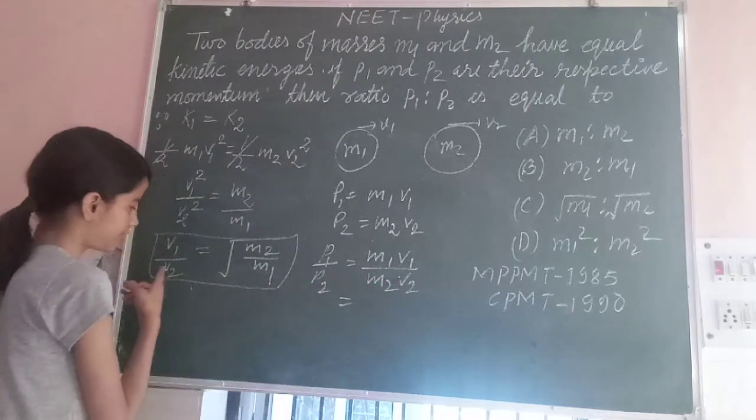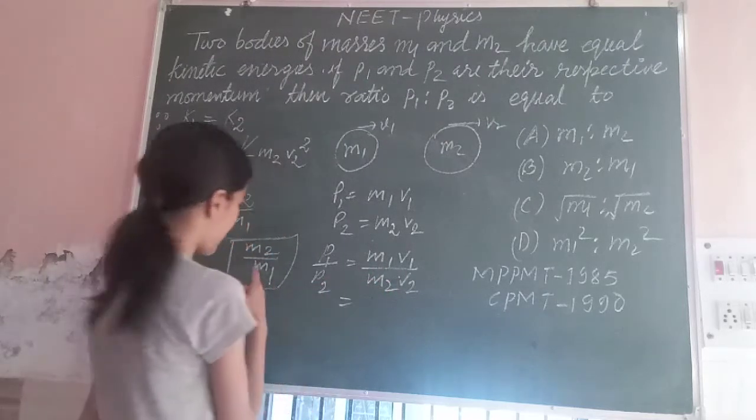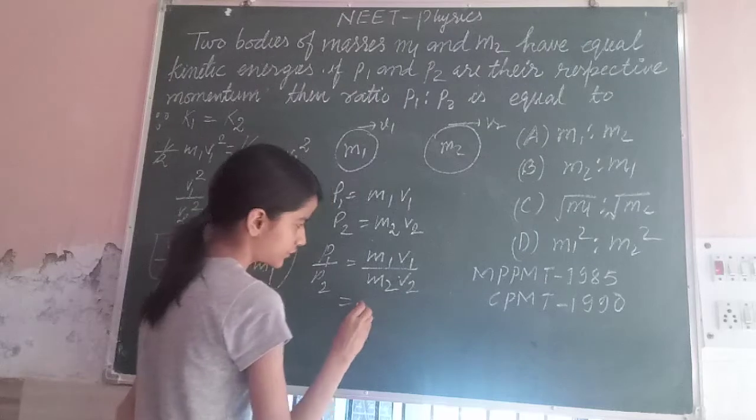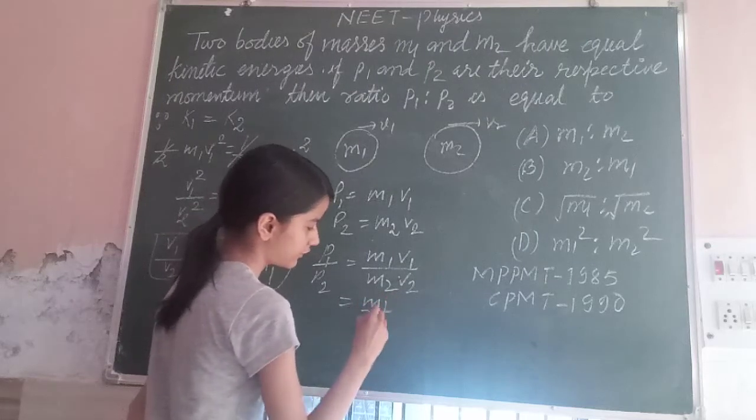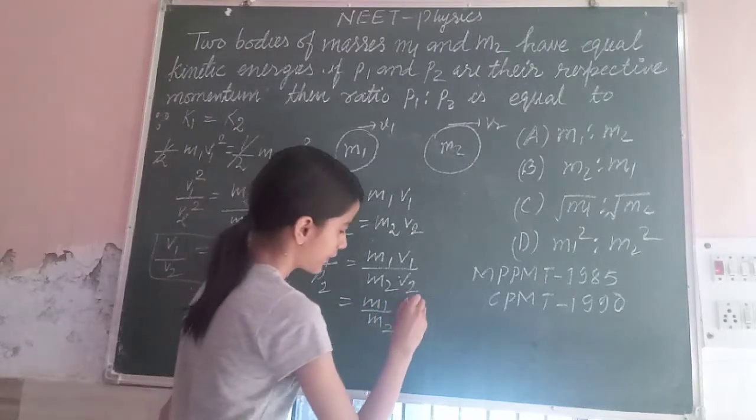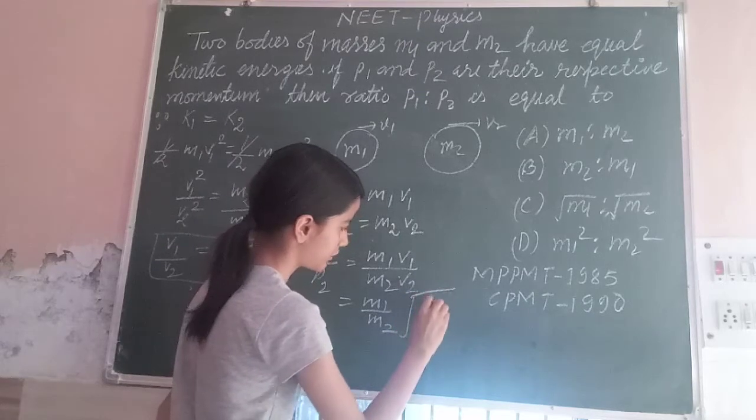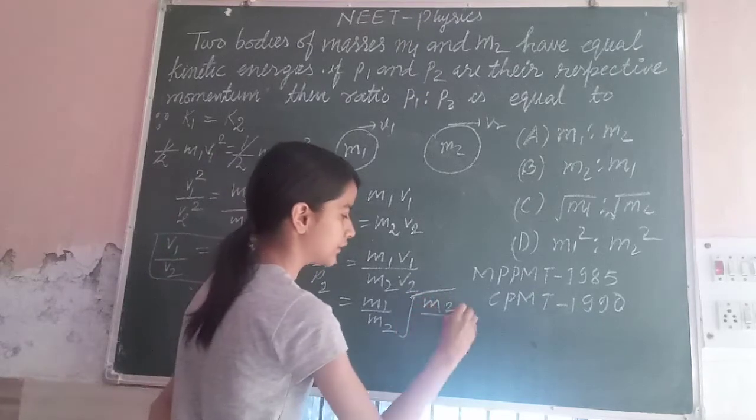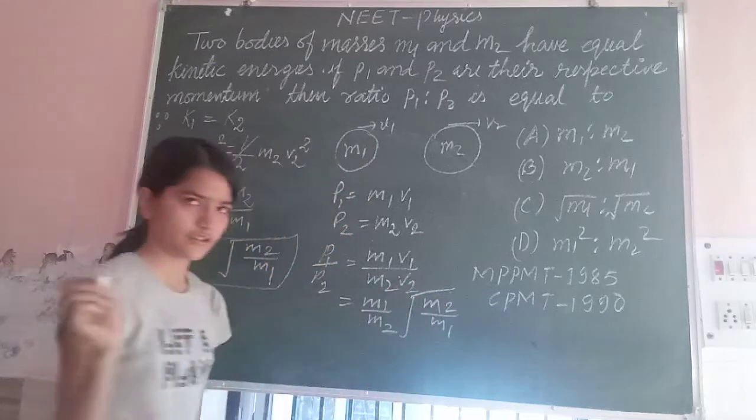Now, here is the value of V1 upon V2 which is equal to under root M2 upon M1.